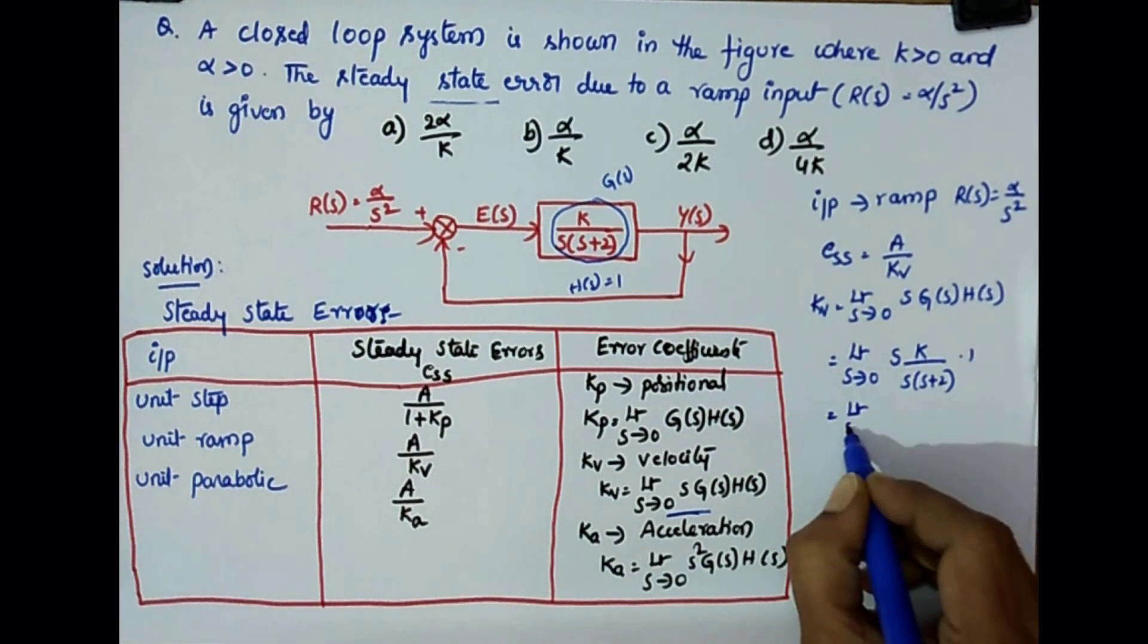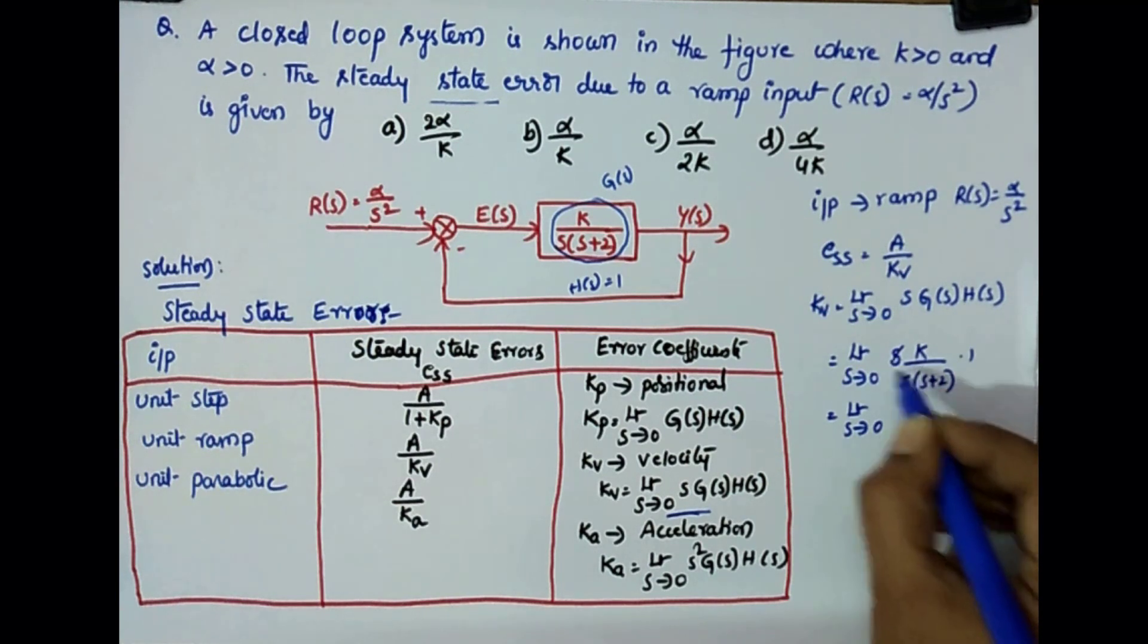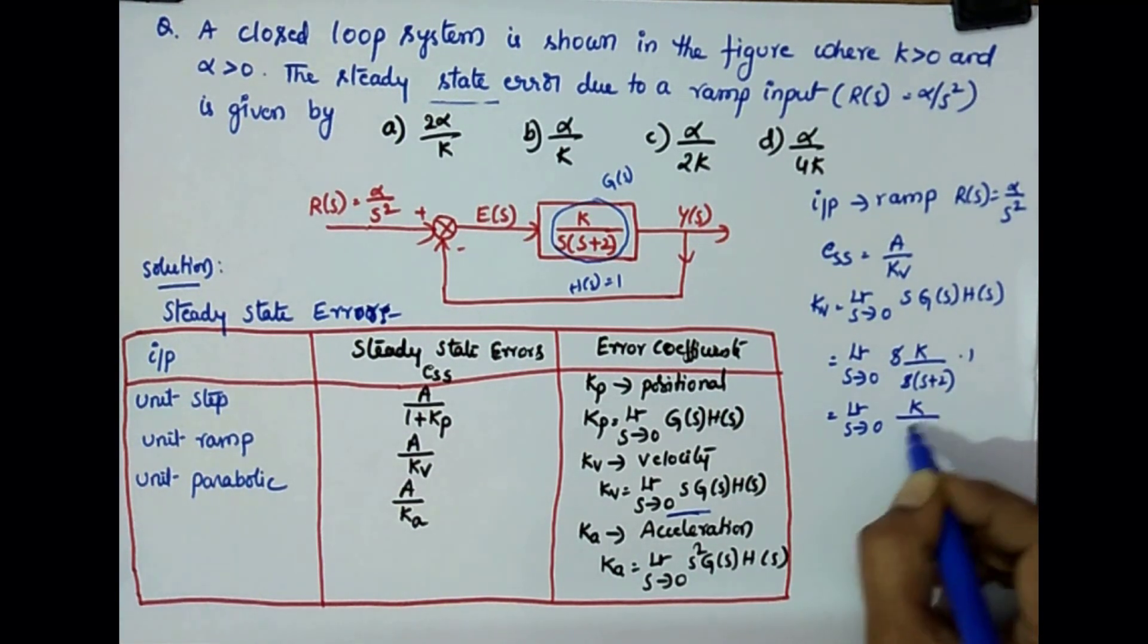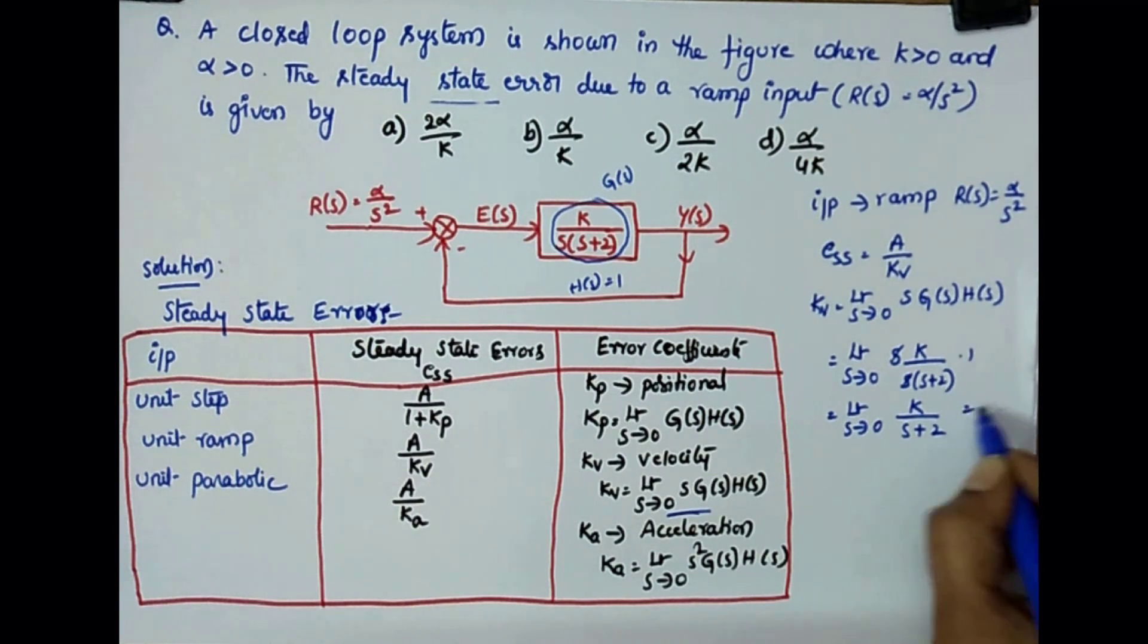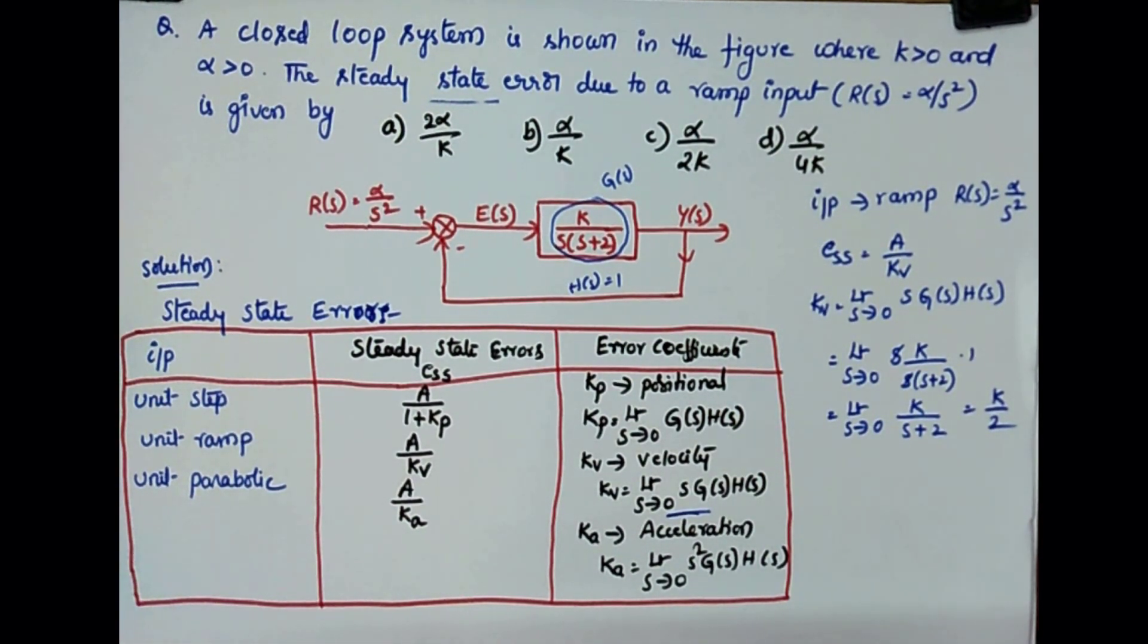So it is limit S tends to 0. S is cancelled, K by S plus 2. So if you keep S tends to 0, it gives you K by 2. Kv is K by 2.